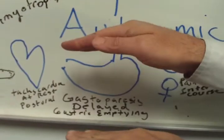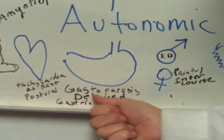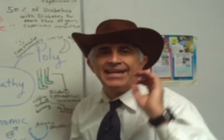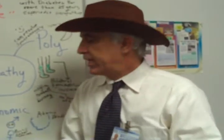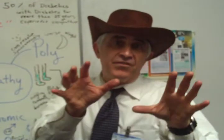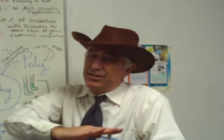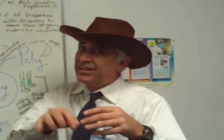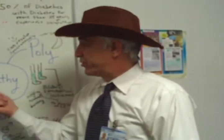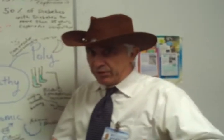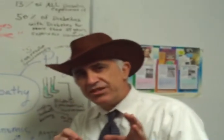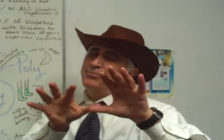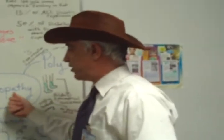Moving to the GI system: the stomach can distend when you have autonomic neuropathy. You may have gastroparesis, meaning the stomach is not moving like it should, resulting in delayed gastric emptying. For patients with a G-tube or NG-tube, the residual may be increased in long-standing diabetics due to GI symptoms from autonomic neuropathy. They may also have bloating, constipation, and rarely, diarrhea.